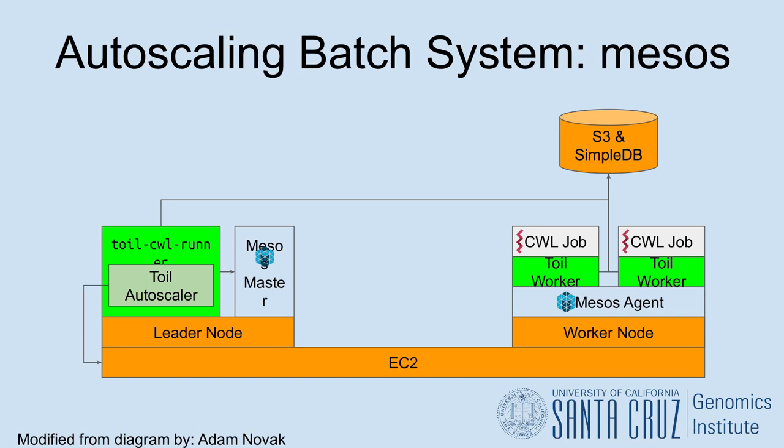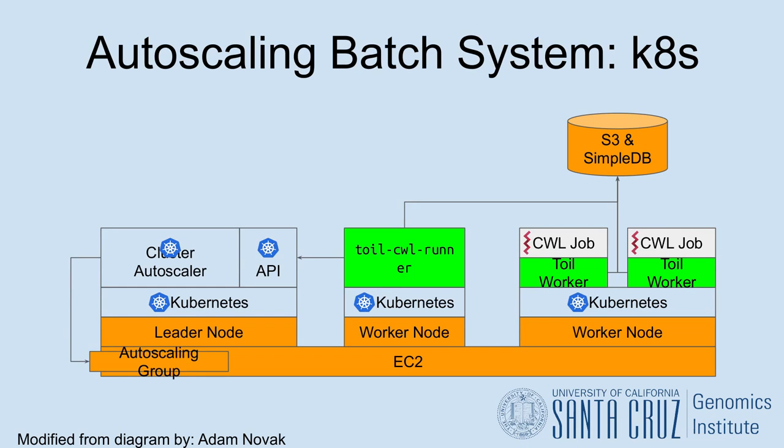All auto-scaling batch systems can leverage spot pricing to reduce the cost of a workflow and take advantage of discounted instance types when available. The Kubernetes auto-scaling batch system, which is relatively new and is now supported on AWS, also makes use of the Toil appliance to provide a consistent environment in which to run tasks, and is intended to eventually replace Mesos and become the default auto-scaling batch system for all supported clouds. This has the advantage of using Kubernetes' built-in auto-scaler so that we have less to maintain and have a more generally accepted product that's considered robust and fit for deployment systems and production.